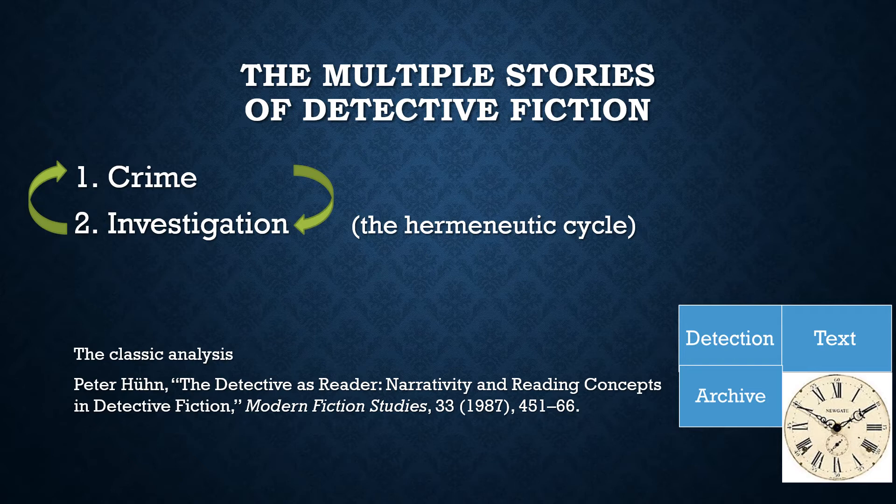Detective fiction relies on hidden stories in a more obvious way. It's often said that classic detective fiction comprises two stories: that of the crime, and that of the investigation, in which the detective tries to discover the story of the crime from a whole series of clues, until the detective is finally able to reconstruct the crime in its entirety up to its end point — the crime itself. Curiously, the crime is also the beginning of the story of the investigation. In other words, the investigation is an attempt to discover its own origin.